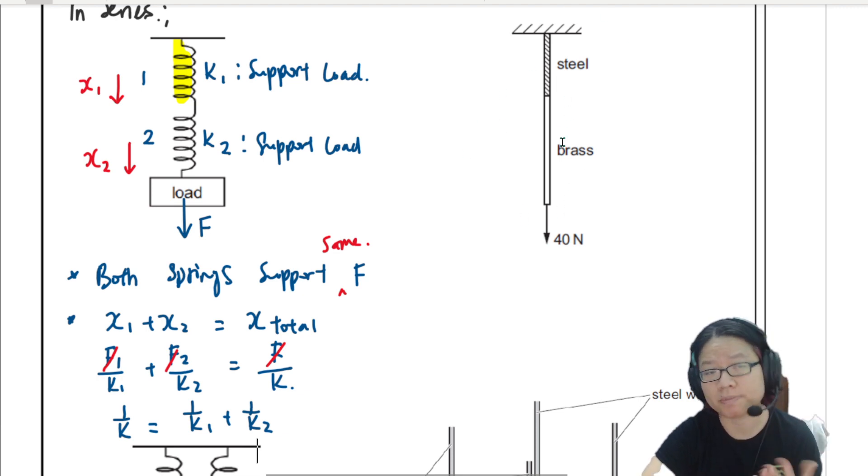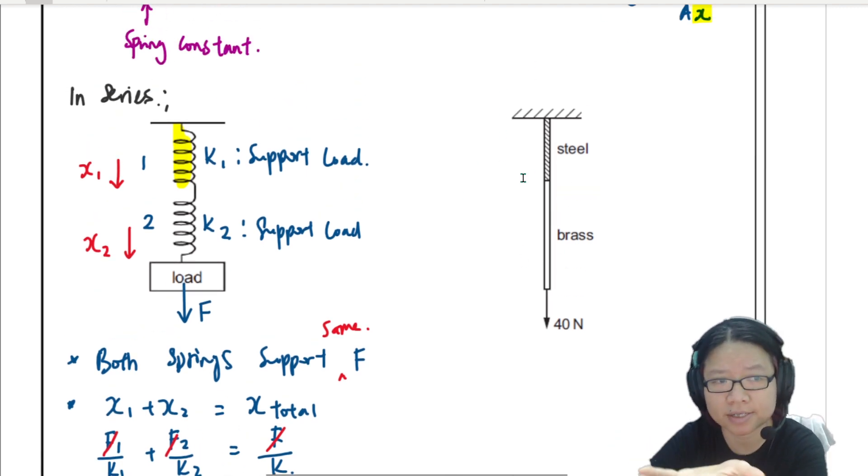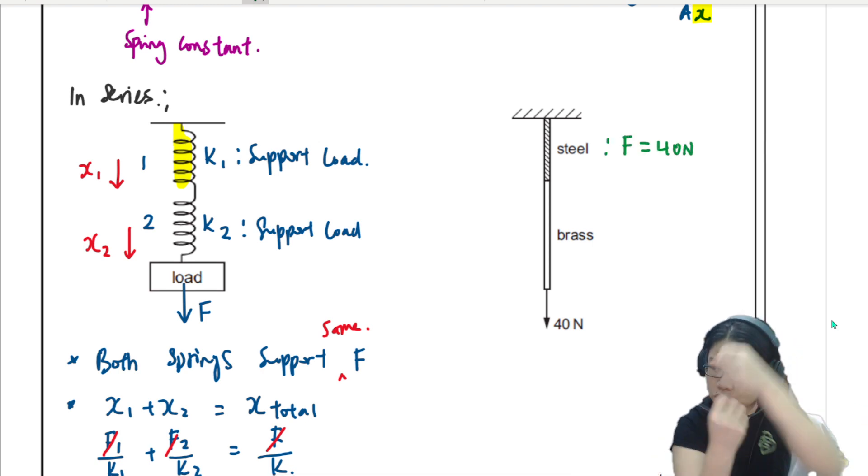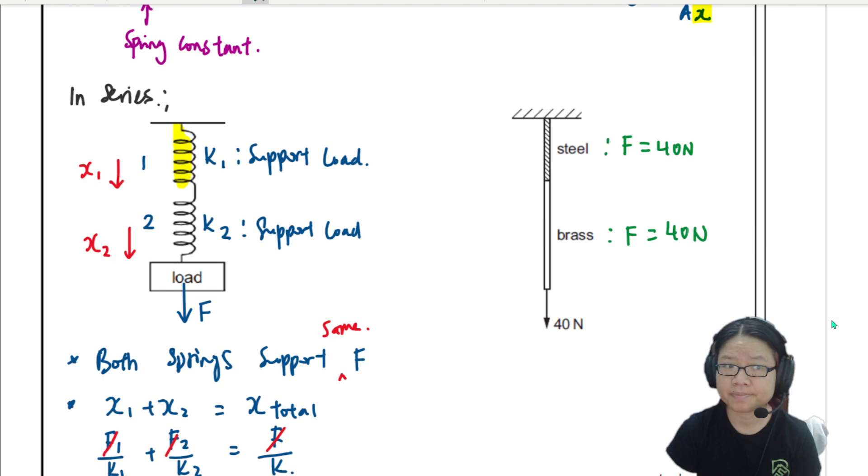So what about a composite rod? Let's look at the rod beside this. You can compare them side by side. So there's steel and there's brass. The force in the steel bar is still 40 newton, because you're stretching it together. The force in the brass bar is also 40 newton. So it's similar to the spring law.